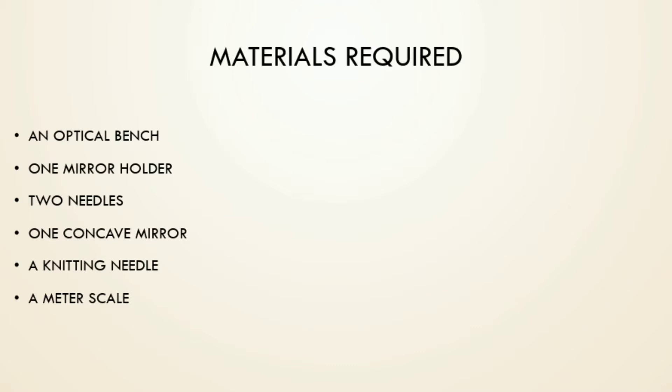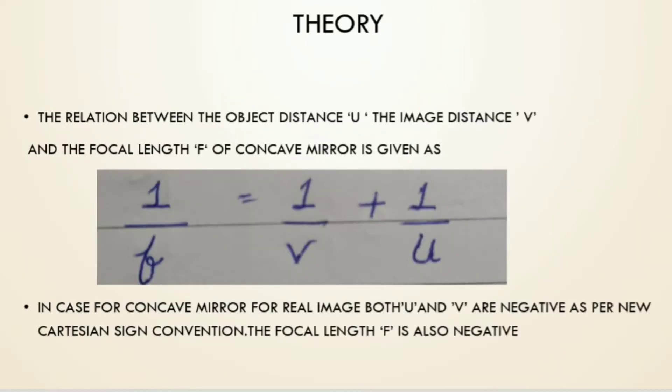The relation between the object distance u, the image distance v, and the focal length f of concave mirror is given by one by f equals one by v plus one by u.